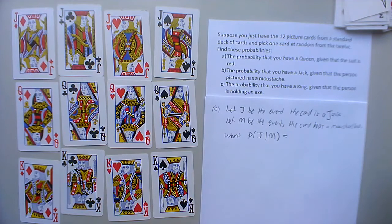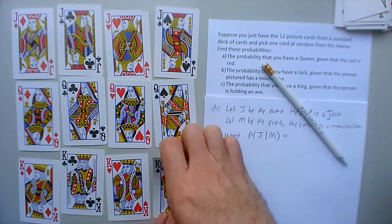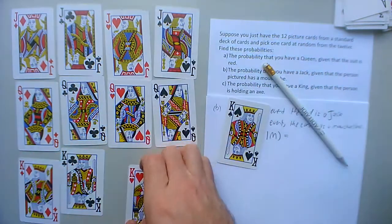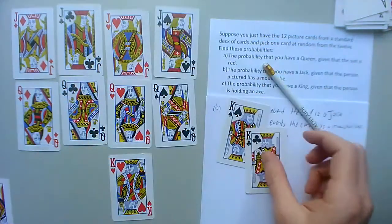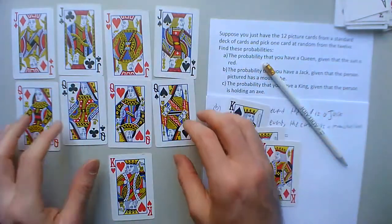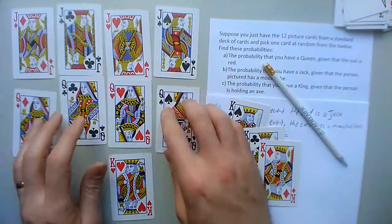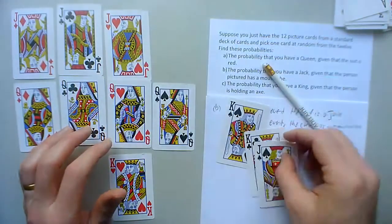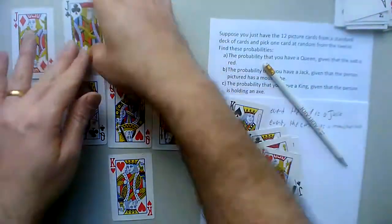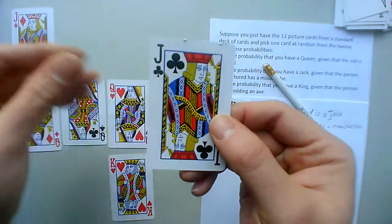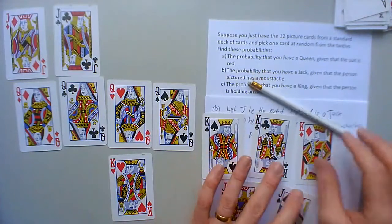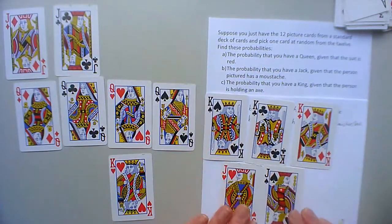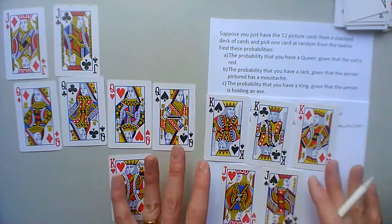So since it's given mustache first, I need to find all the mustaches and then I'll see how many jacks there are out of those. Okay, well he's got a mustache, he doesn't, he's got a mustache, he's got a mustache. The queens, no, none of the queens have mustaches. He's got a mustache, he's got a mustache, he doesn't, he doesn't. Okay, so that's all the mustaches. So it looks like there's five mustaches.